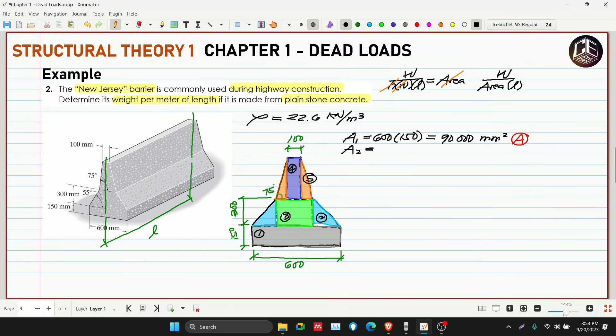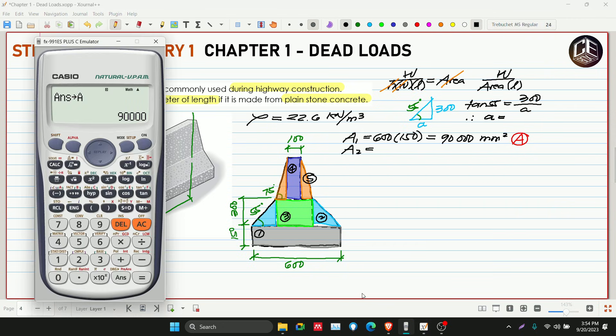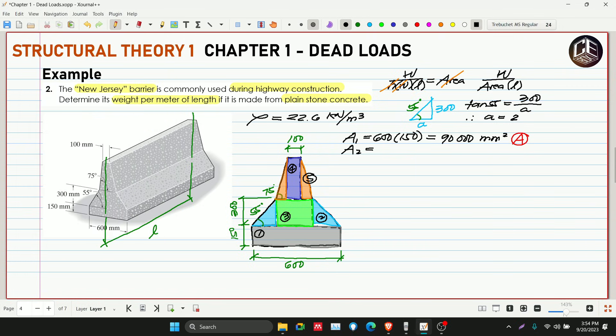Next, area 2. Triangle. So ang height natin is 300. Meron pa palang sukat to, 55 degrees. Meron tayong height, wala tayong base. Triangle lang naman yun. Para sa area 2, ito yung ating triangle 300. Then yung ating base let's say A. And then ito raw is 55 degrees. So paano massolve ang A? This is tangent of 55 is equivalent to opposite na 300 over adjacent na A. So therefore, ang ating A is 300 over tangent of 55.